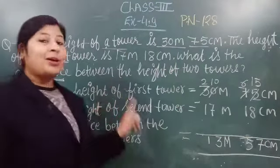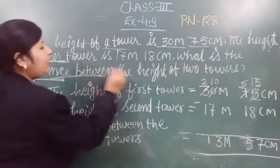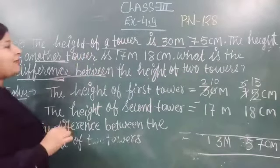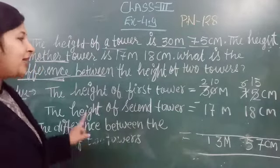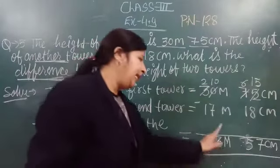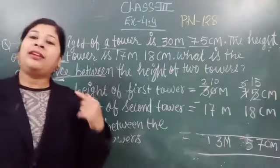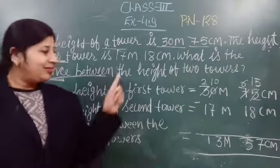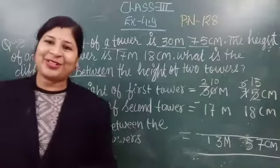तो अब हमने find कर लिया — difference between the height of two towers। इन दोनों की height में कितना difference है? इन दोनों की height में 13 meter 57 centimeter का difference है। Okay good, आप सबको आ गया, super! So we solve the next question.